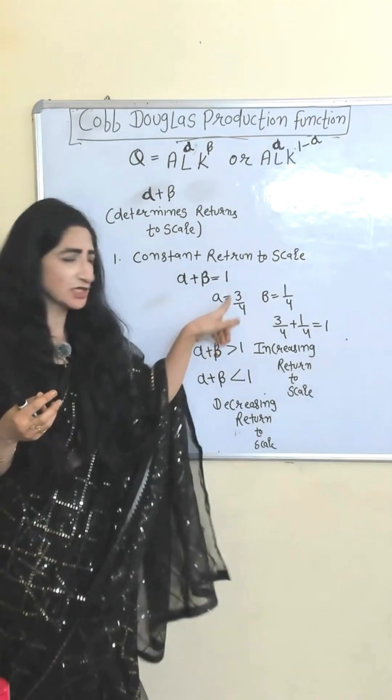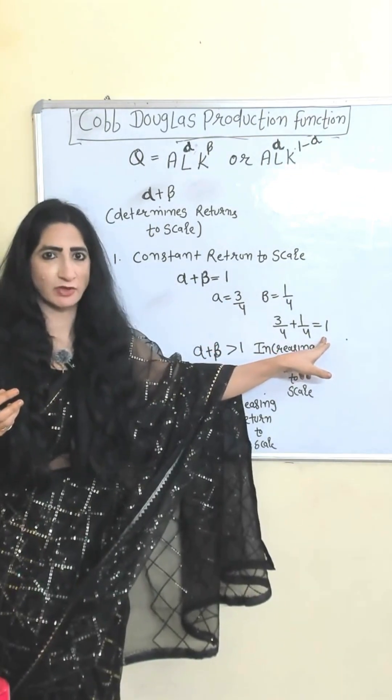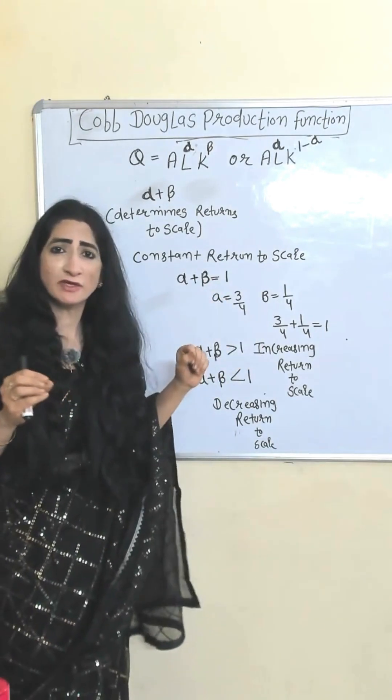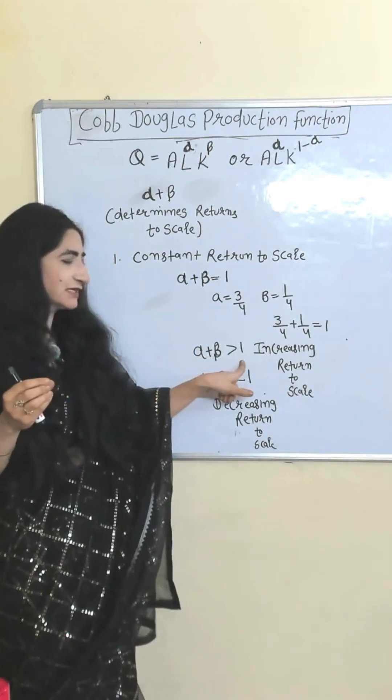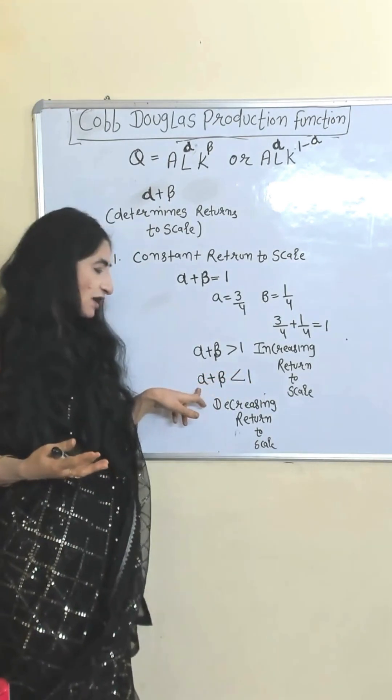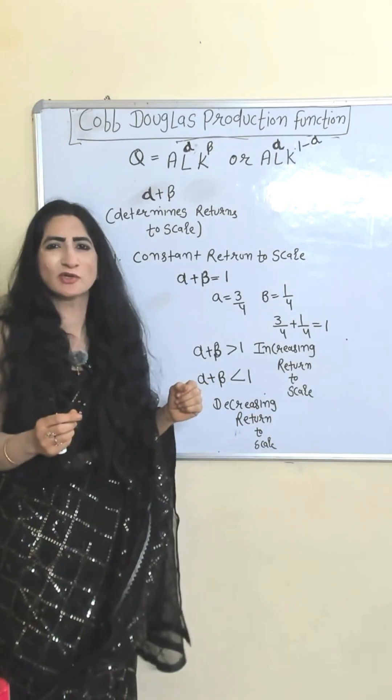Suppose alpha equal to 3 over 4, beta equal to 1 over 4. When you add it will become equal to 1. Sum of alpha and beta equal to 1 means constant return to scale. If sum is more than 1 that means increasing return to scale. If sum is less than 1 that means decreasing return to scale.